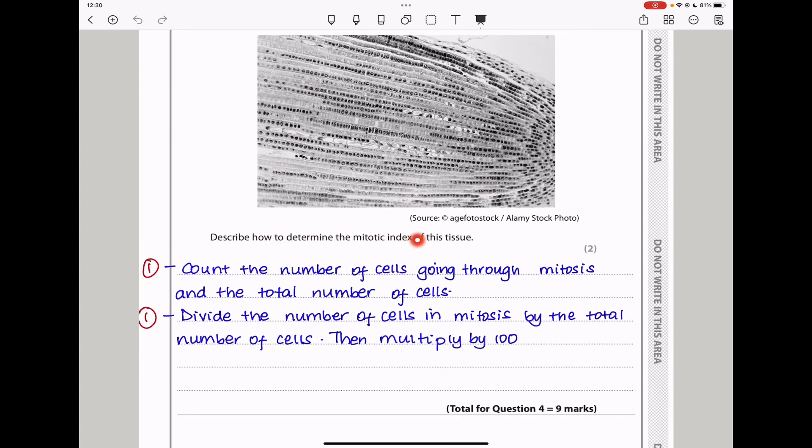They say, describe how to determine the mitotic index of this tissue. To determine the mitotic index, we need to find the number of cells that are actively going through mitosis. And then we also have to find the total number of cells. So here I said, you count the number of cells going through mitosis. And then count the total number of cells. Then you will divide the number of cells in mitosis by the total number of cells. And then you could multiply by 100.